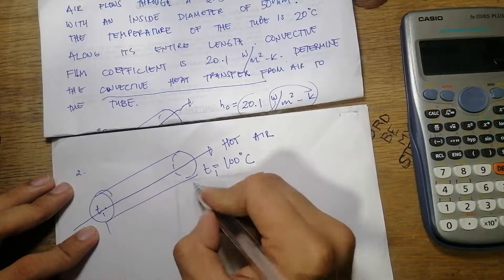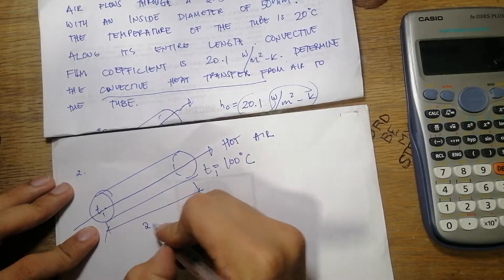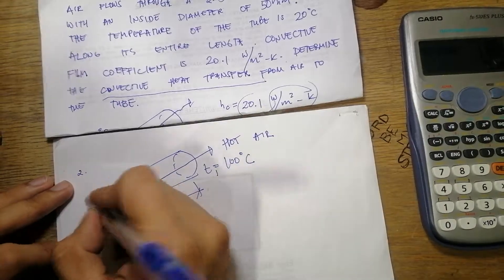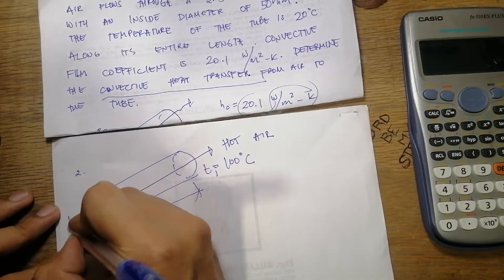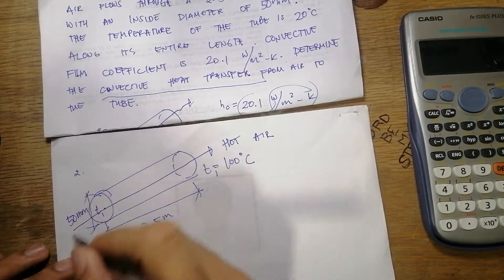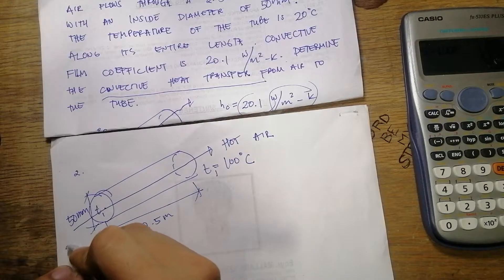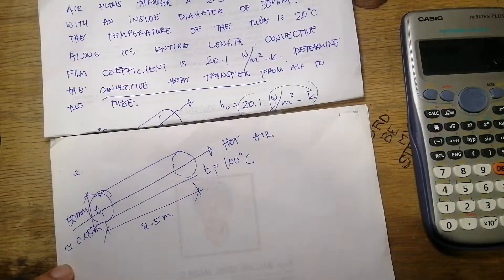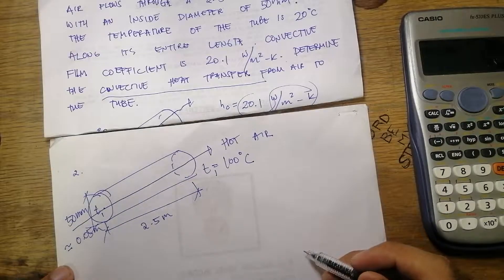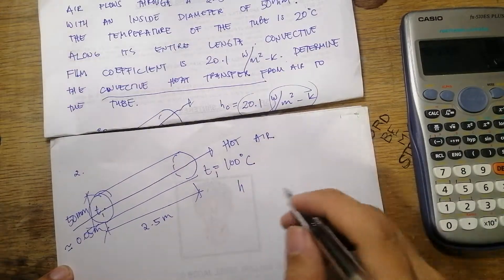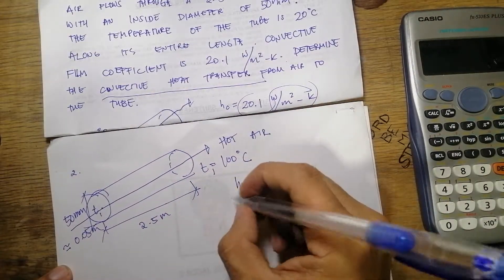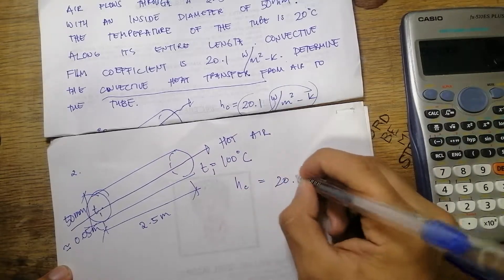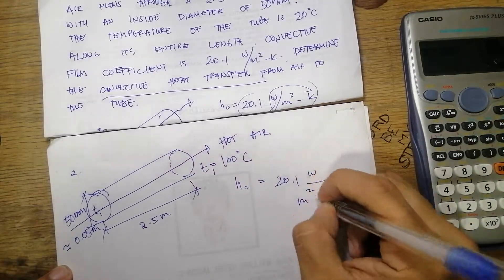The length of the tube is 2.5 meters and the diameter is 50 mm, equivalent to 0.05 meters. The convective film coefficient is equal to 20.1 watt per meter squared kelvin.